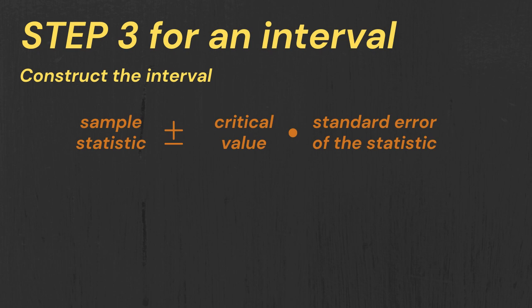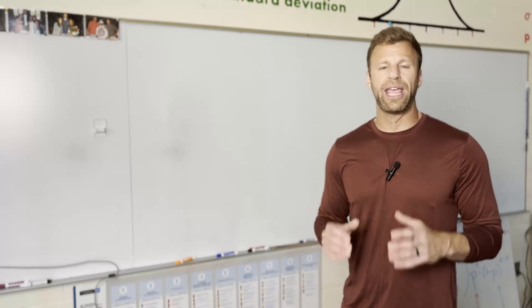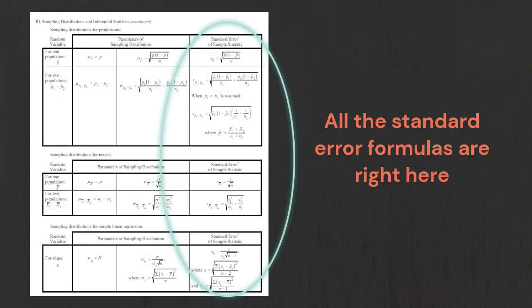And then the standard error, well that all depends what you're working with. One sample proportion, one sample mean, difference between two proportions, difference between two means, or maybe even slope. The formulas for standard error are on the back or the second page of the AP stats formula sheet. All you got to know is what you're looking for, and then that final column has all the different formulas for standard error.